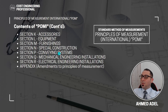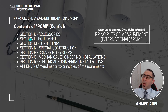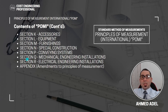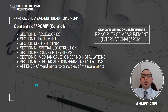The sections continue with Section P: Conveying Systems, Section Q: Mechanical Engineering Installations, and Section R: Electrical Engineering Installations, followed by the Appendix. For each section, there are details to follow in your measurement. If you have deviated from what is specified, those amendments must be listed in the appendix so anyone reviewing the BOQ can understand exactly how quantities were measured.